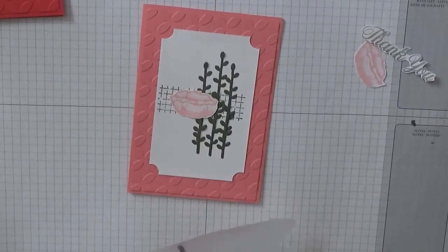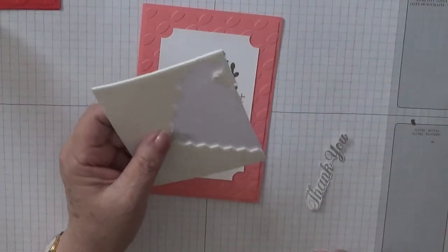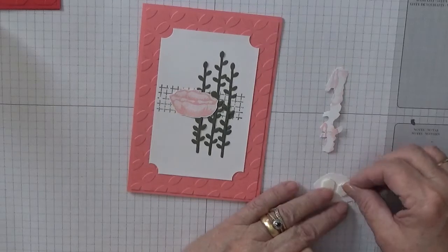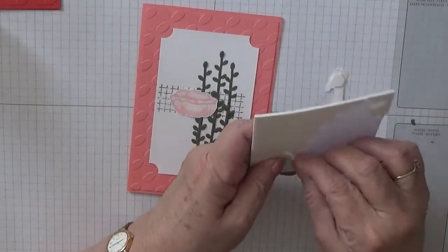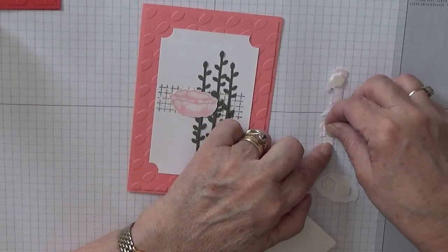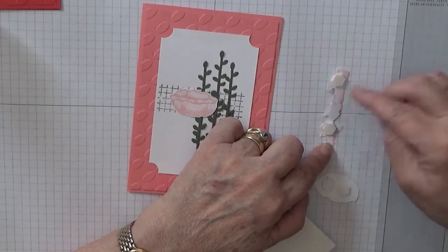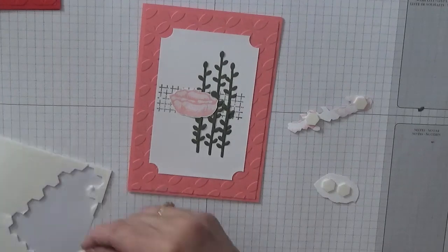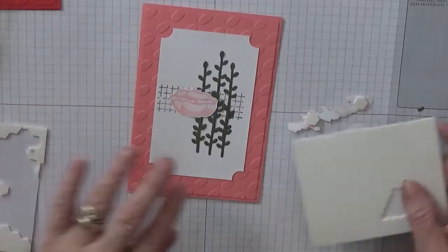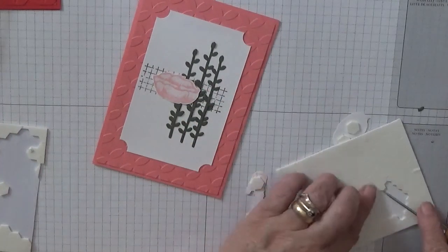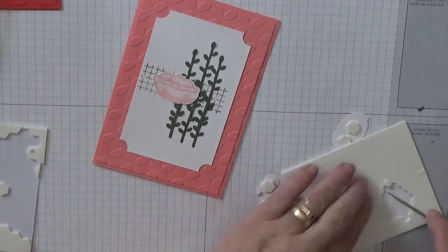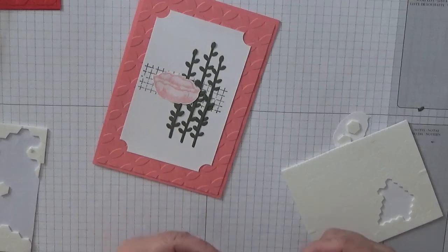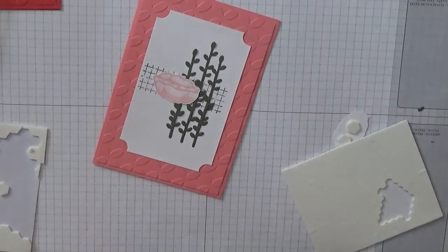And we get some dimensionals and we put two large ones on the flower. I've got a large one there and a large one there. Yep need to get some minis out. Just put a couple of minis on the word thank you. Now I'm going to have to take that one off and add a mini down there.